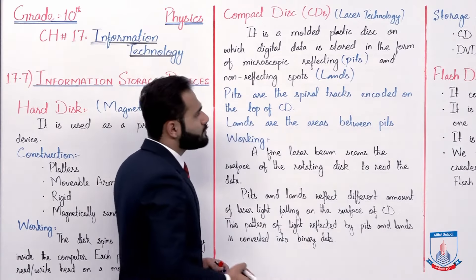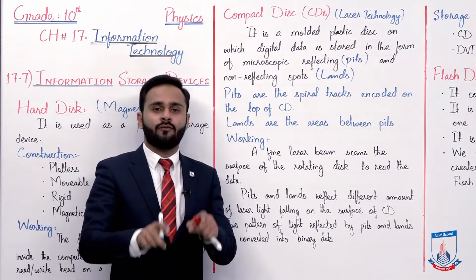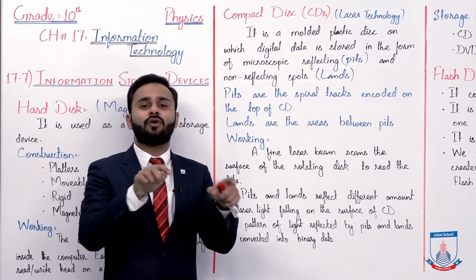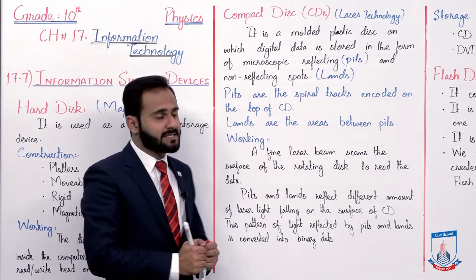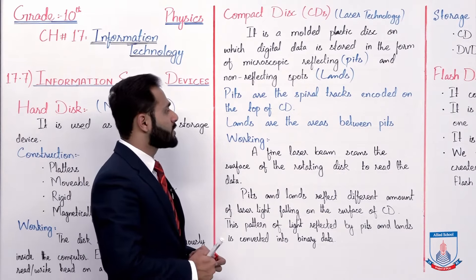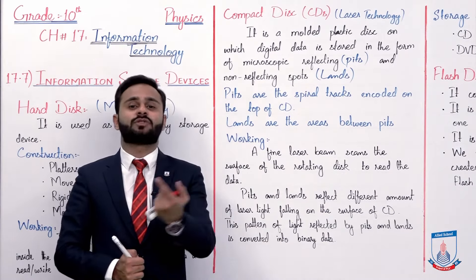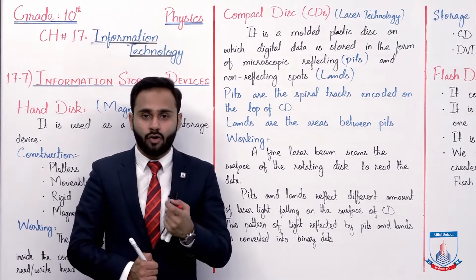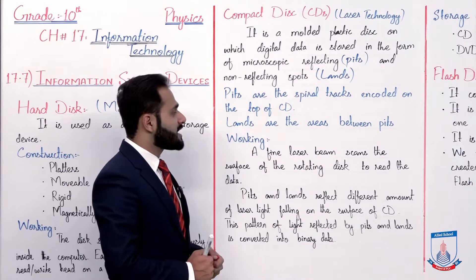Pits and lands are basically the parts where data is saved on the CD. Pits are the spiral tracks encoded on the top of CDs — they are just like spiral tracks encoded on the surface. Lands are the areas between pits. So if we suppose there are two spiral tracks, the area between them is the land.